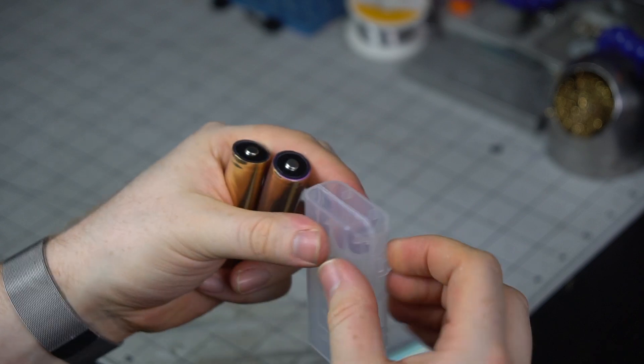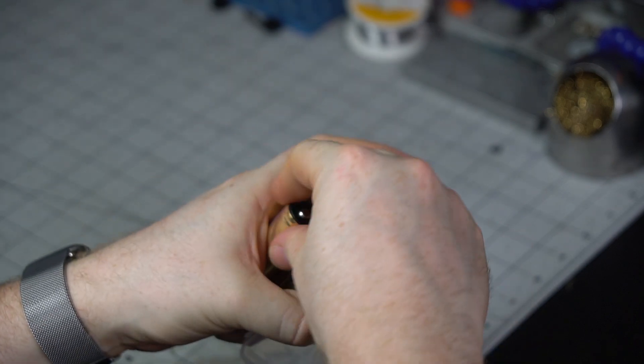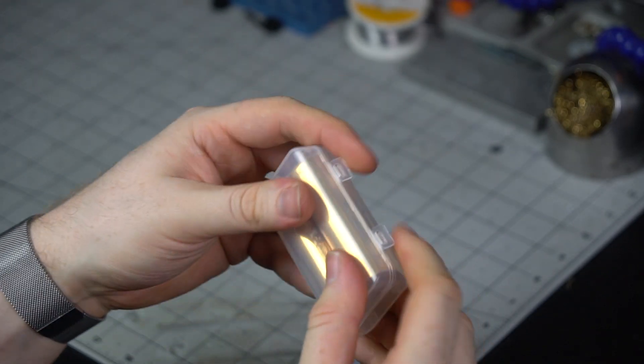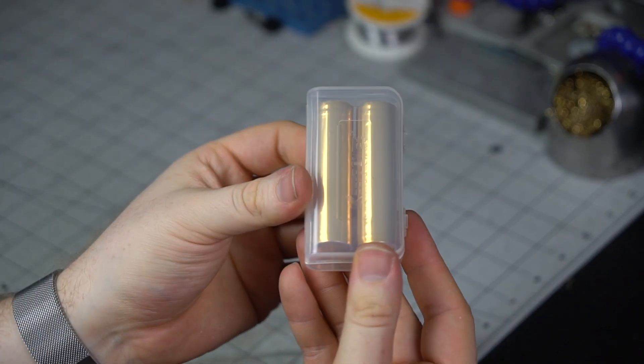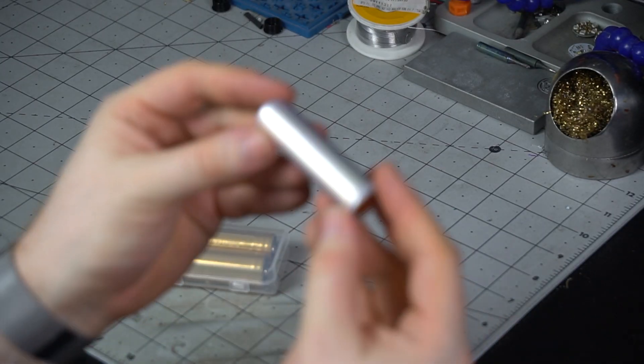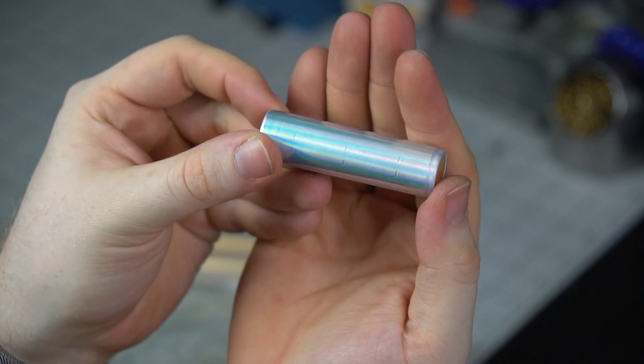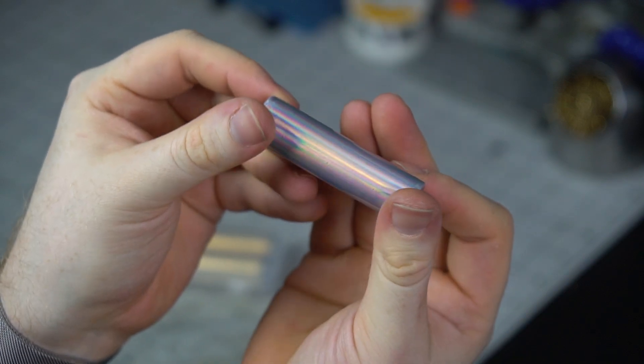Again we've got the prism color which came out really nice. Nice reflective sort of prism on there. And we've also got our copper and chrome.